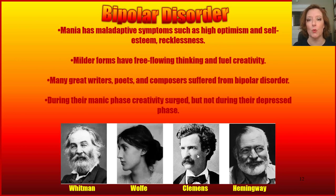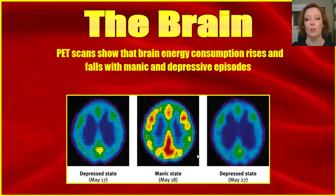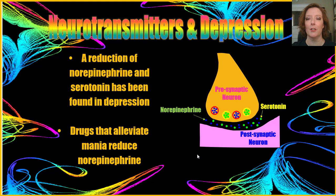Historical figures who had bipolar disorder include Walt Whitman, Virginia Woolf, Mark Twain (whose real name was Samuel Clemens), and Ernest Hemingway. Looking at the brain, PET scans show that brain energy consumption rises and falls with manic and depressive episodes — you see much less consumption of energy or glucose in the depressed states and much more energy being consumed during manic states. There is also a biological factor at the neurotransmitter level: a reduction of norepinephrine and serotonin has been found in depression, and drugs that alleviate mania also reduce norepinephrine.